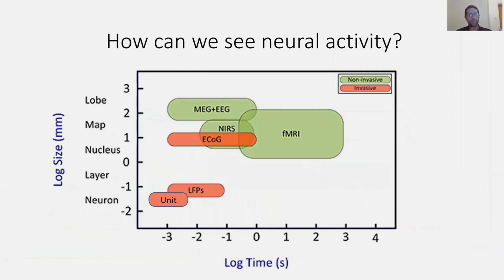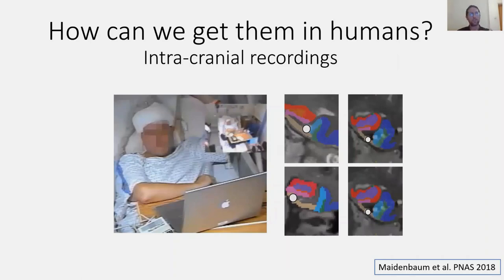How do we see these things? We have a range of imaging methods. Non-invasive methods like fMRI, MEG, EEG, and fNIRS have the advantage of being accessible but have limitations — it's hard to localize signals precisely and we can't get single-cell recordings. fMRI gives slow temporal but high spatial resolution; EEG and MEG offer millisecond resolution but poor spatial localization. Your lab has worked on algorithms to address that.